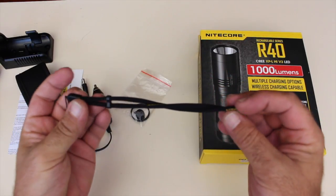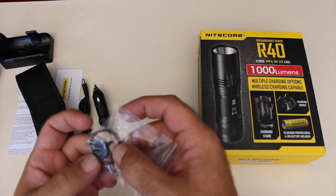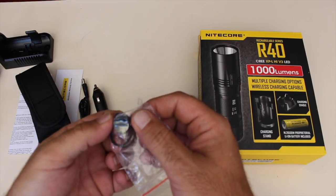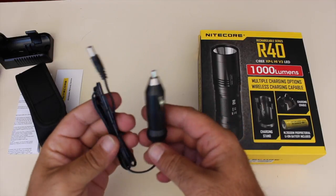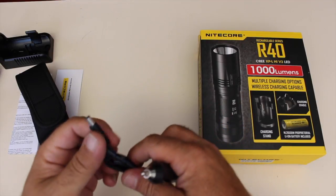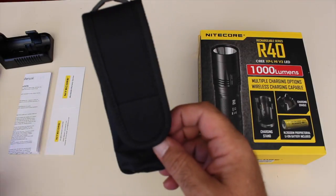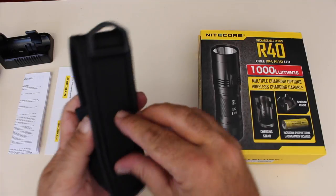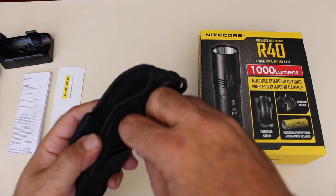You get your lanyard, some spare o-rings, an end cap cover, 12 volt cigarette lighter charger, and the holster that's going to be folded over and put your belt through here.